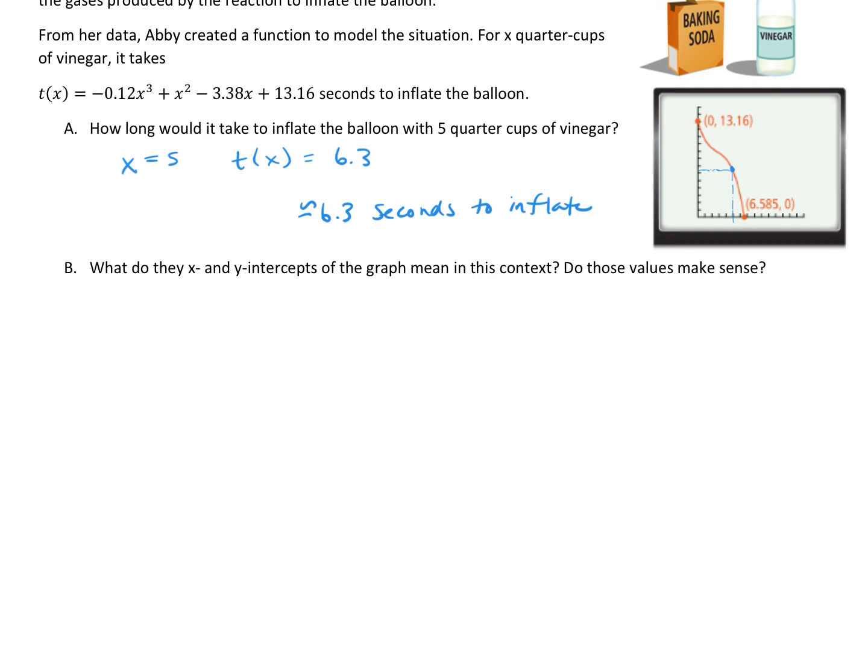The x-intercept is about equal to 6.6. So that ordered pair would be (6.6, 0). What we want to remember is that the x value is representing the number of those quarter cups. And the 0 is the number of seconds it takes to inflate the balloon.